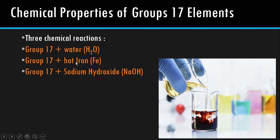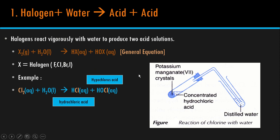So kita tengok, go through one by one. For the first reaction between halogen Group 17 with water. The product is two acids — halogen reacts vigorously with water to produce two acid solutions. You must remember the general equation: bila Group 17 react dengan water, automatically produknya ada dua acid — HX dan HOX.